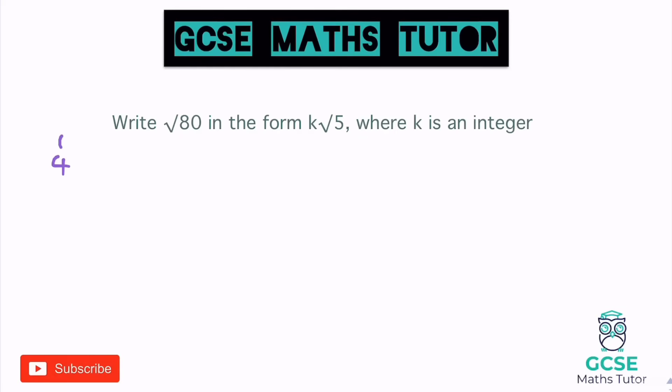1, 4 — 4 goes in. 9, 16, 25, 36. This is where you've got to be really, really careful. We know that 4 goes in, but we have to make sure and check: is there a bigger square number that actually goes into 80? It's not a very nice one to spot, but 16 actually does go into 80.